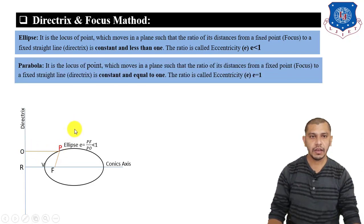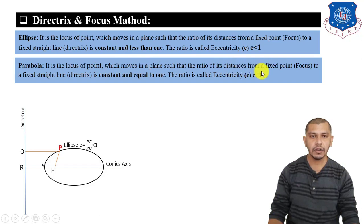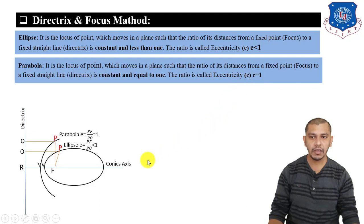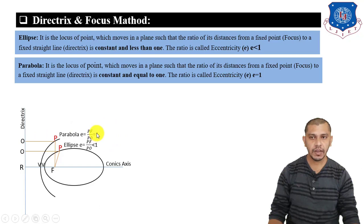Now, parabola. A parabola is a locus of a point which moves in a plane such that the ratio of its distances from the fixed point to a fixed straight line will remain constant and equal to 1. This ratio is known as the eccentricity ratio, and it will be equal to 1 for a parabola.